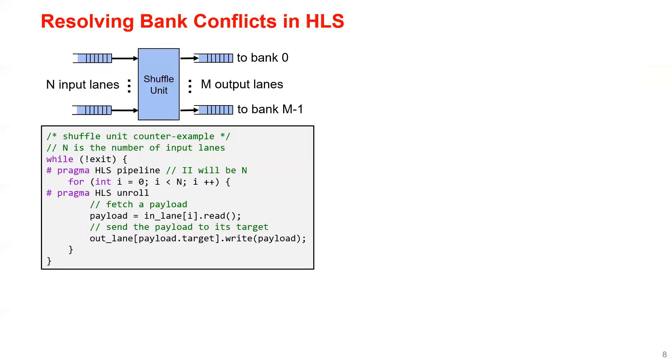Implementing the shuffle unit in HLS is not easy. Here's a counter example. When the design is pushed through the flow, HLS will assume the worst-case traffic pattern and process all the input lines sequentially. If we have N input lines, the pipeline II will be N. This is because there's no arbitration logic in the code.